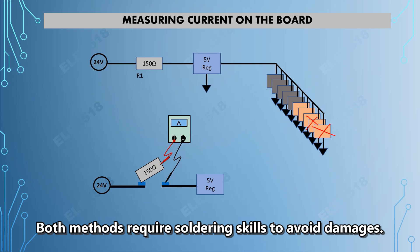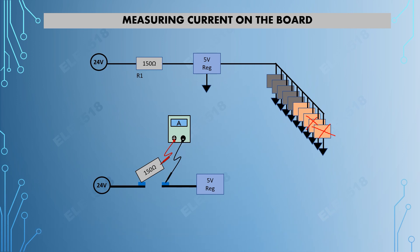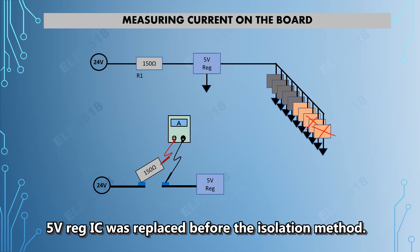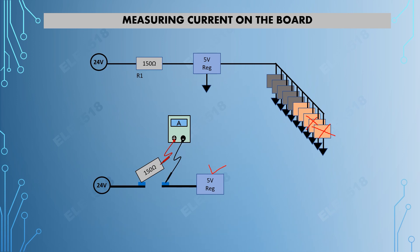Take note that before the isolation method is performed, I already replaced the 5 volts regulator IC of the R1 line. But the current drawn still remained the same.